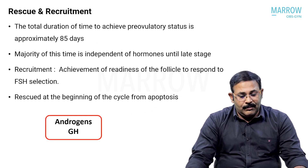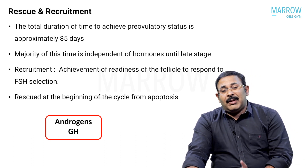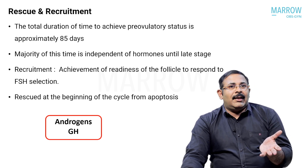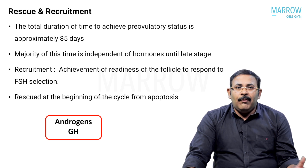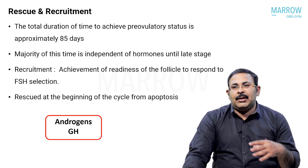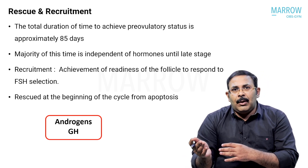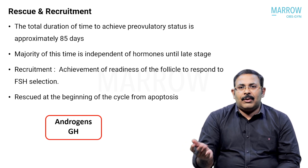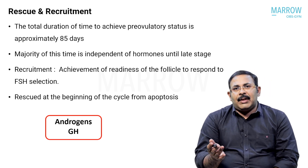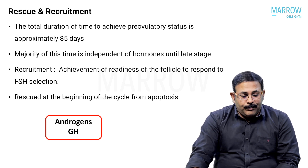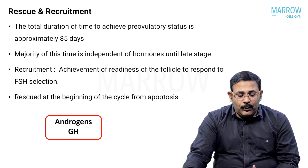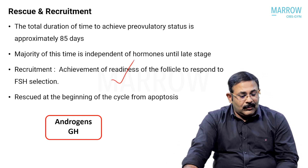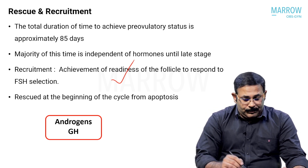Recruitment happens over a period of around 85 days - that is the approximate time described in textbooks. Therefore, if we are using any agents to improve recruitment like growth hormone or androgens, we have to administer them for at least two to three months; giving just five to ten days will not work. Even for two to three months it might help or might not - it is not very clear, but clinicians use androgens or growth hormone to improve recruitment. The dominant follicle is selected by day 5 to day 7 of the cycle in a 28-day cycle. Key features include: increased FSH receptors making it more sensitive to FSH, aromatase activity converting androgen to estrogen, and inhibin B secretion.